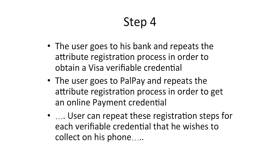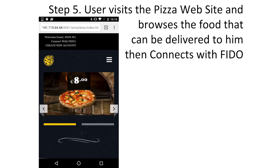You then go to the other issuers: the bank to get a Visa credential, PayPal to get a payment credential, the train company to get a discount card credential, and so on. This registration step is only done once — to register with each issuer and say: this is me, this is my phone, these are the keys I'll use. It must be done in a strong, secure manner, because if anyone can masquerade as you at registration time they can steal your verifiable credentials. Once all credentials are on your phone you can shop around the internet in a provably secure manner.